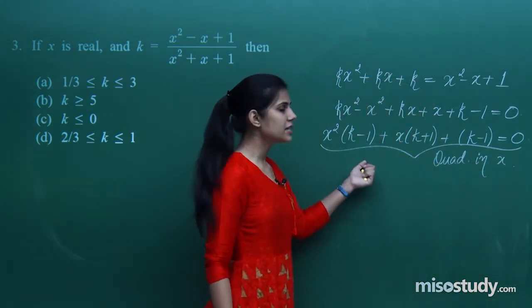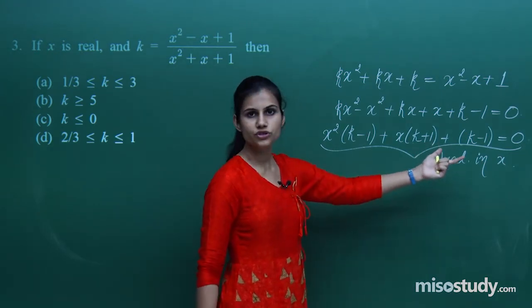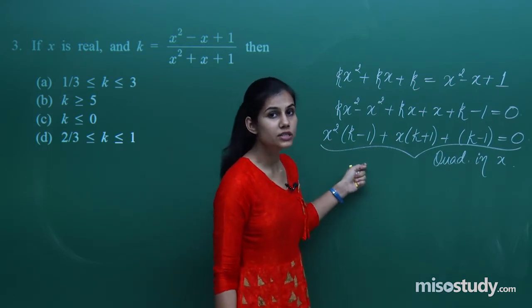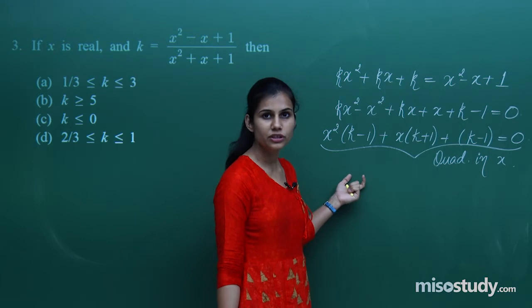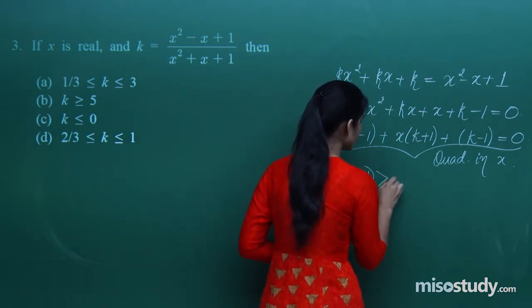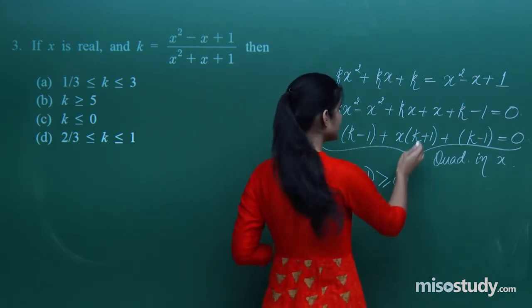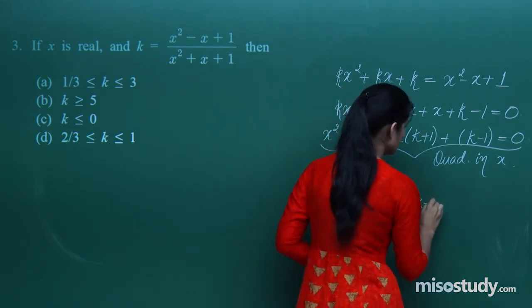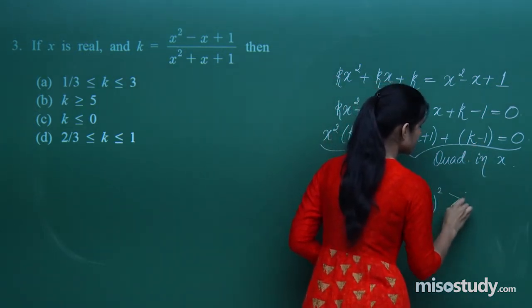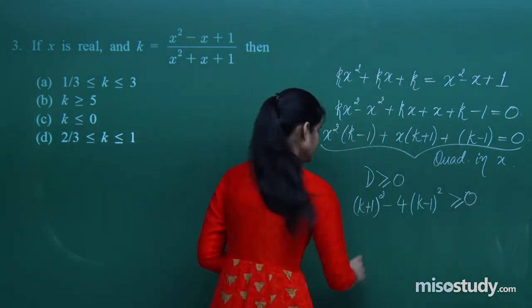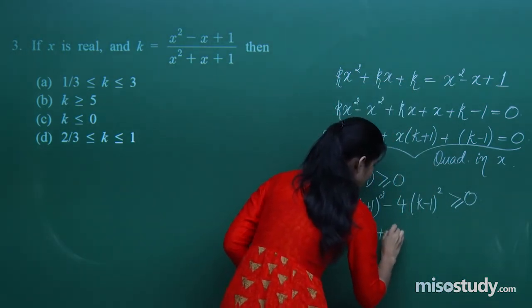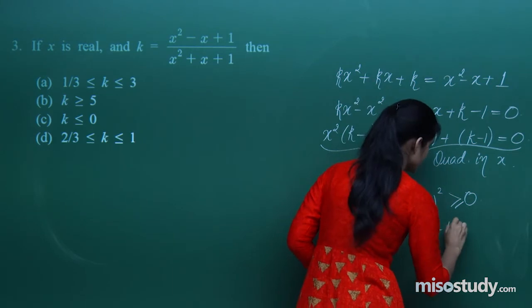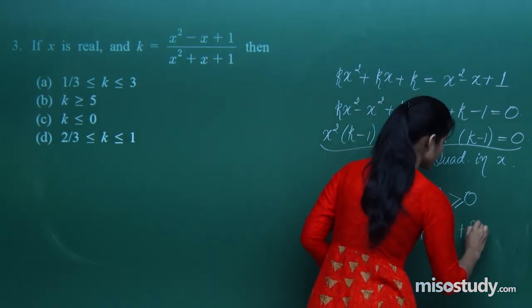Since x is real, the discriminant of this quadratic must be non-negative — it cannot be negative, otherwise we get imaginary roots. So b² - 4ac ≥ 0. Here: (k+1)² - 4(k-1)(k-1) ≥ 0, which gives k² + 1 + 2k - 4(k-1)² ≥ 0. Expanding: k² + 2k + 1 - 4k² + 8k - 4 ≥ 0.